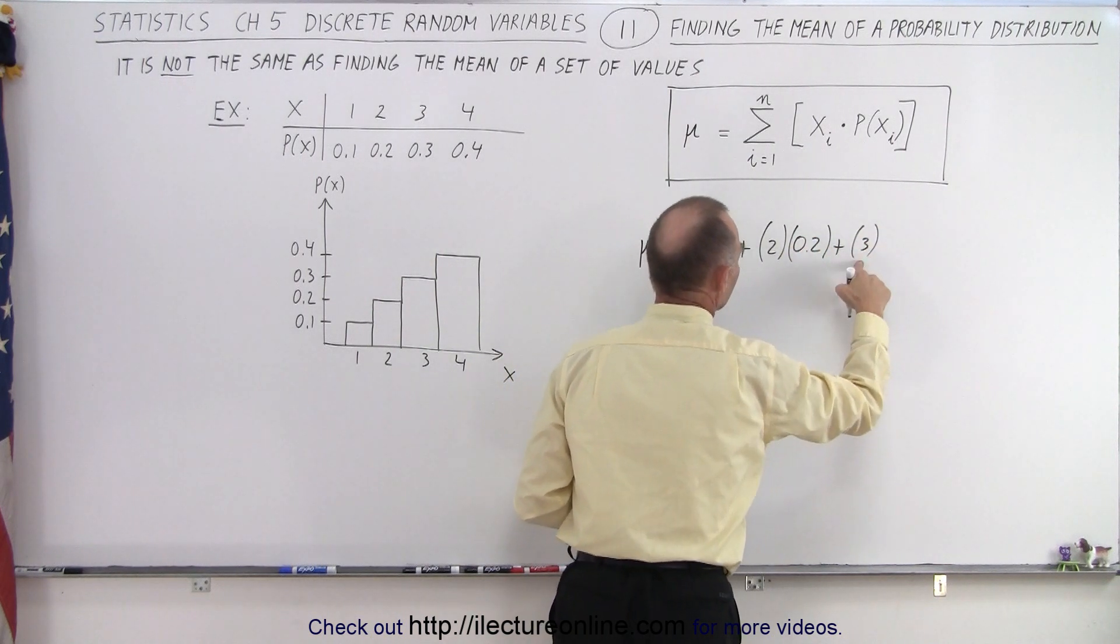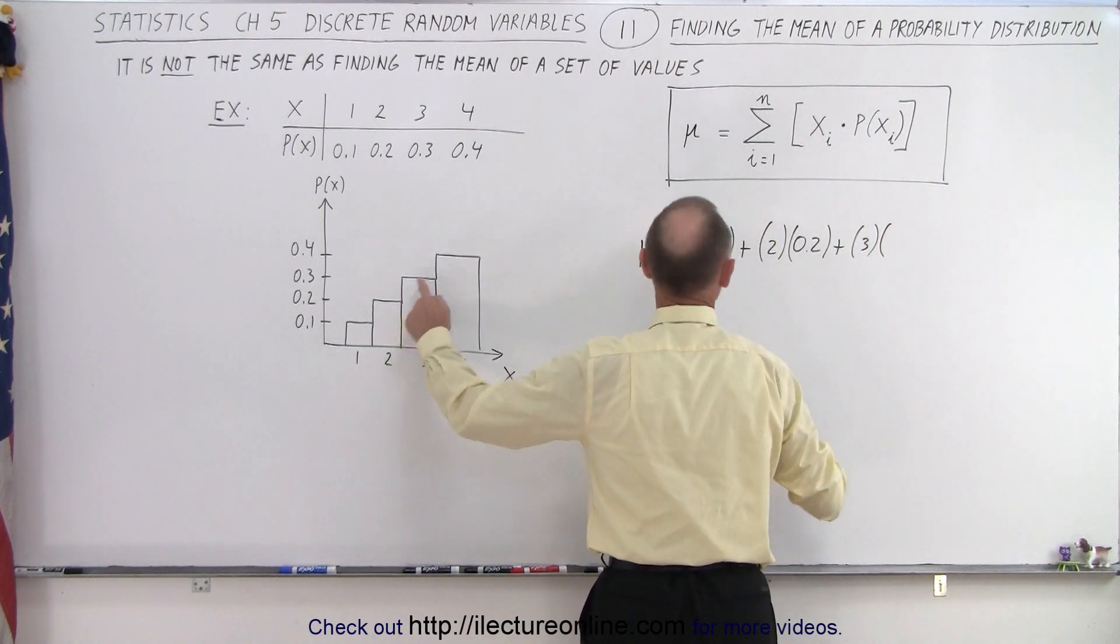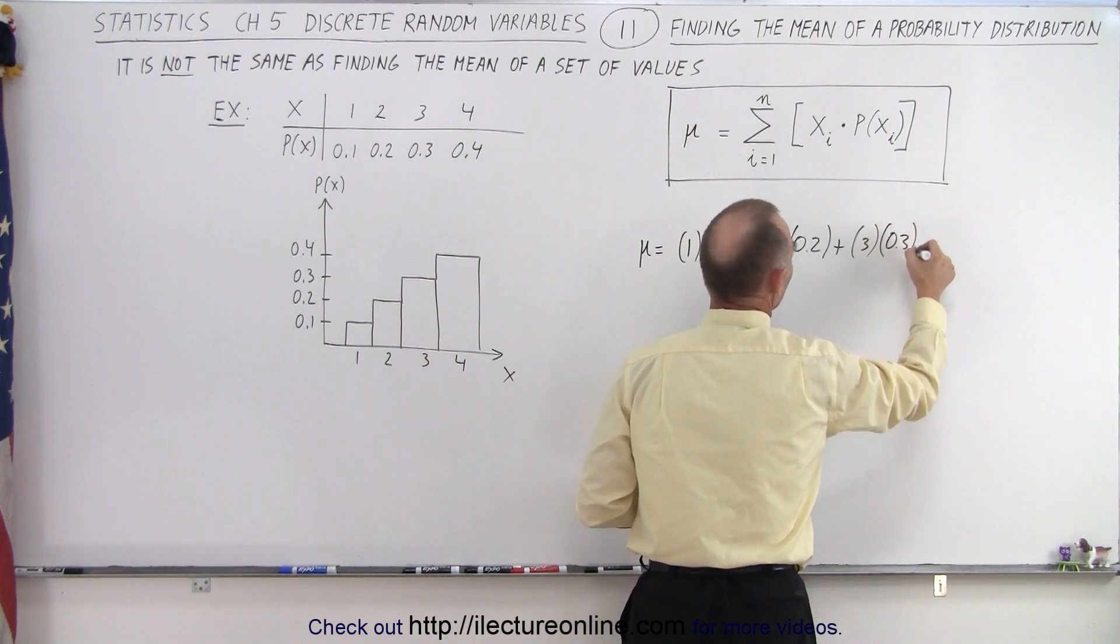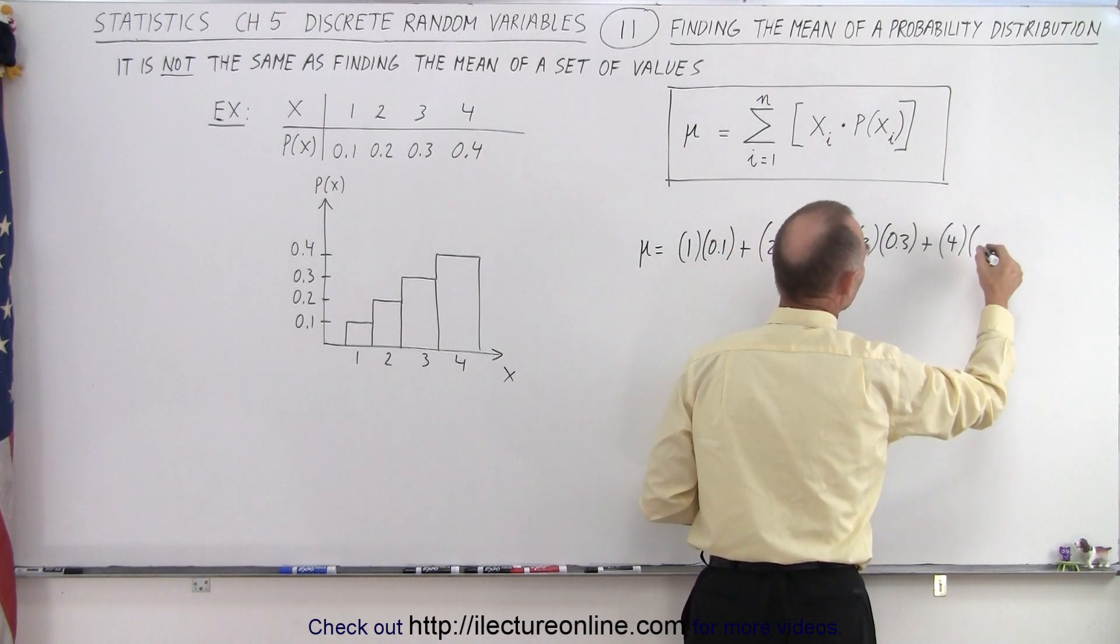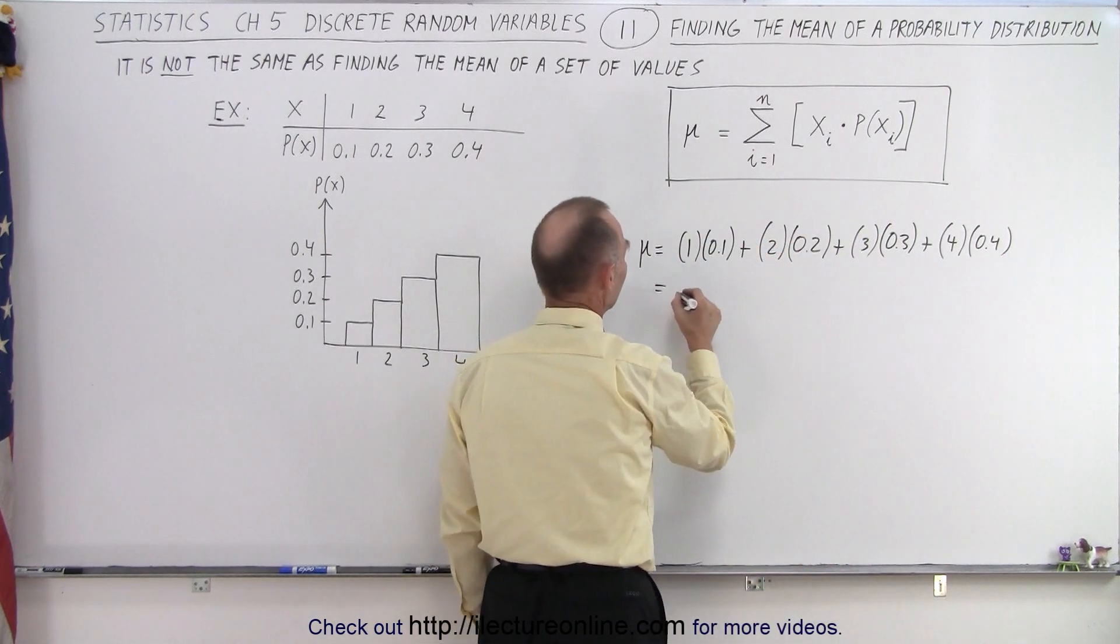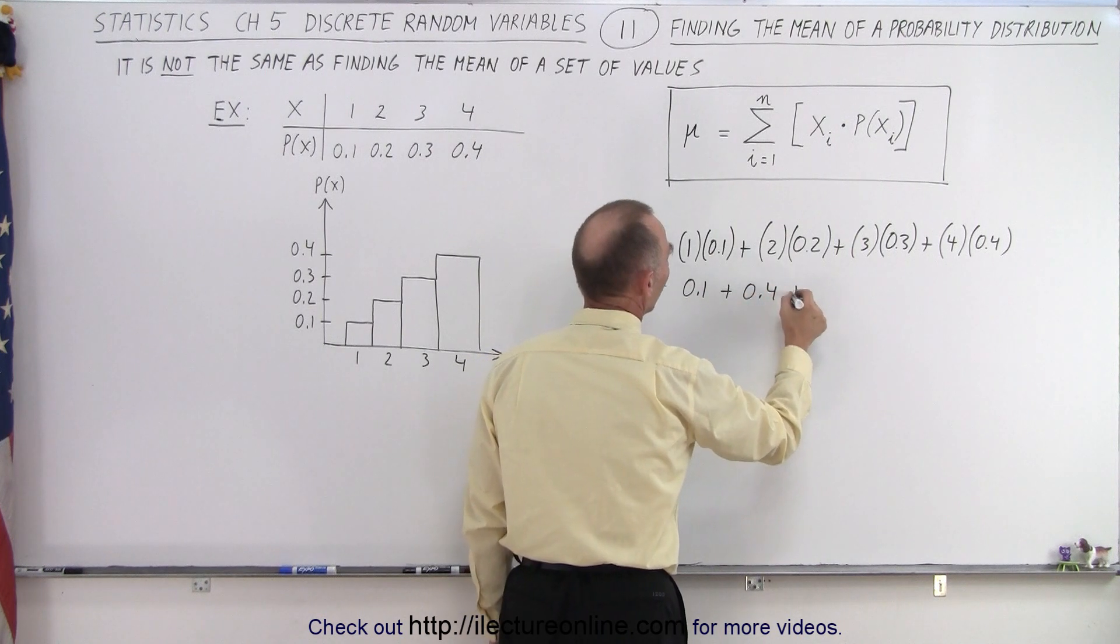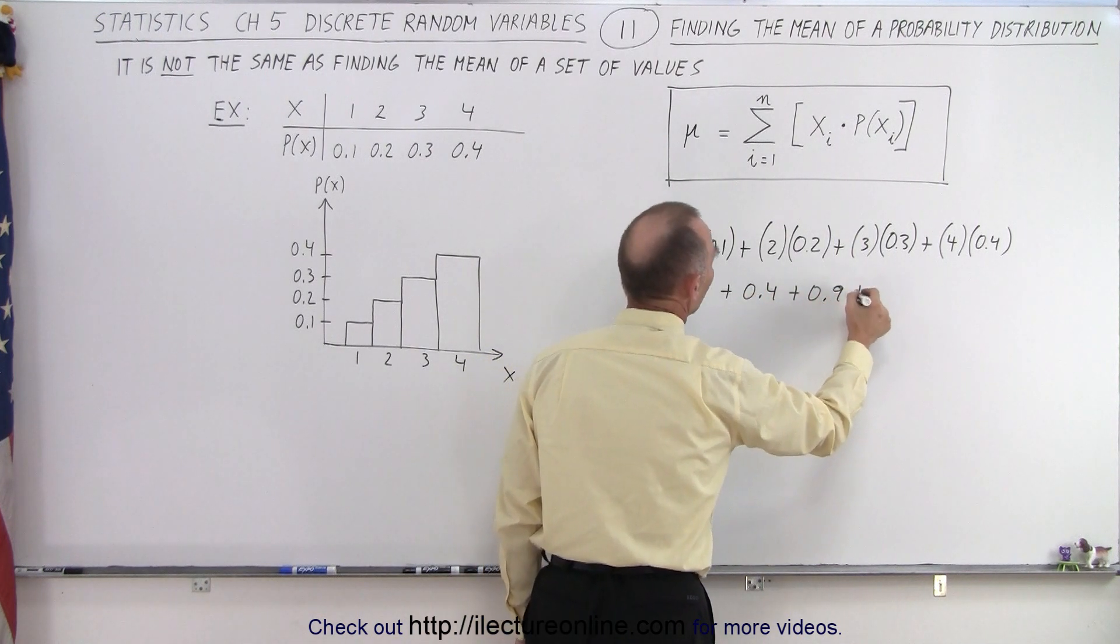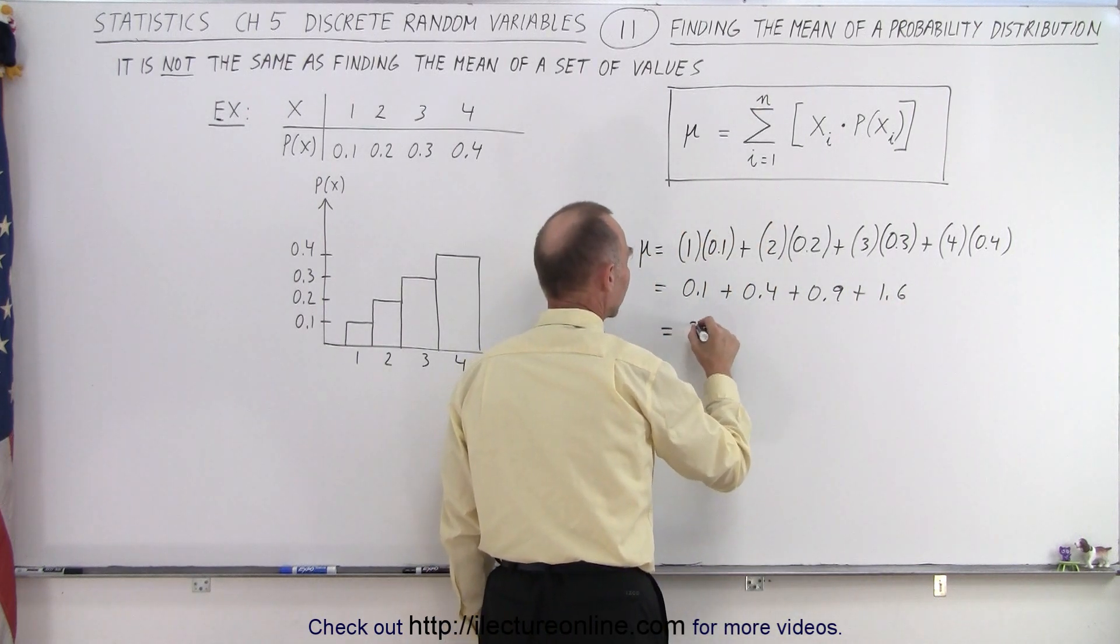that x equals 3 times the probability that x equals 3 plus the value for x equals 4 times the probability that x equals 4 which is 0.4. Alright, let's go ahead and do that. So this is equal to 0.1 plus 0.4 plus 0.9 plus 1.6. So when we add all that together we get 3.